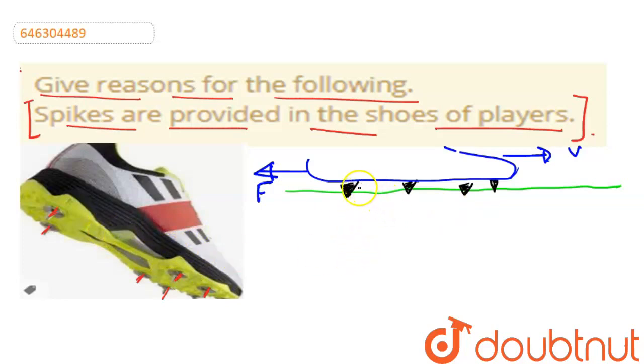But these spikes increase our friction force. Hence, our chances of slipping are going to go down. So this is our reason.